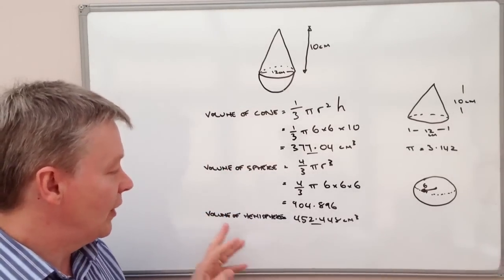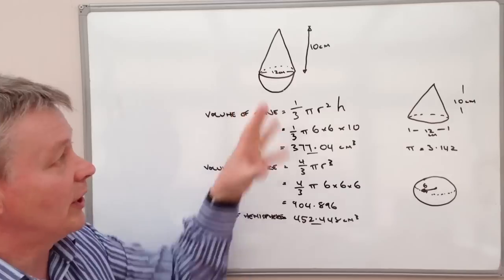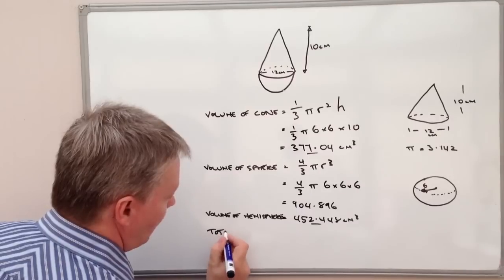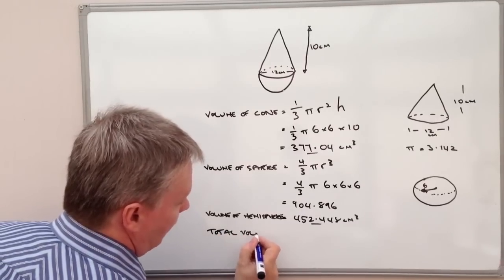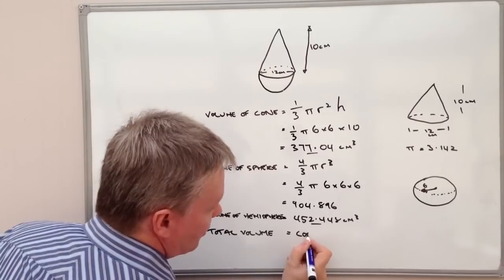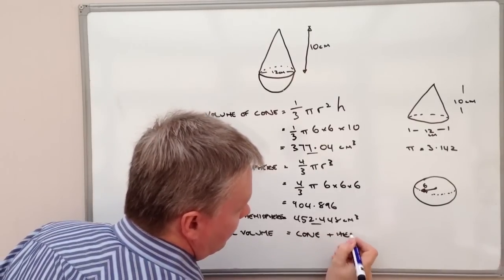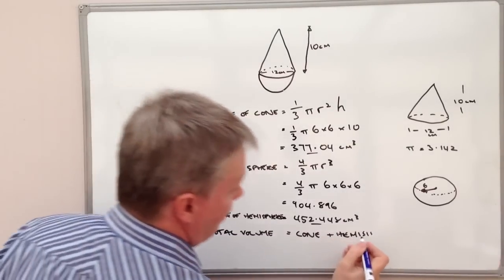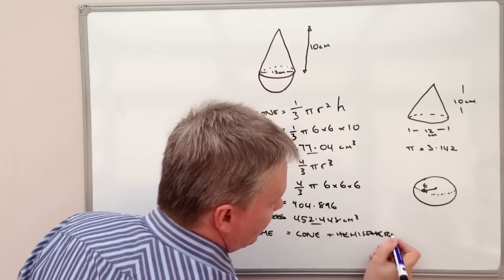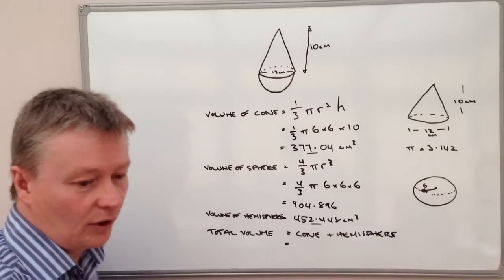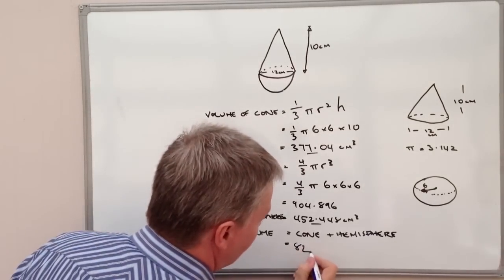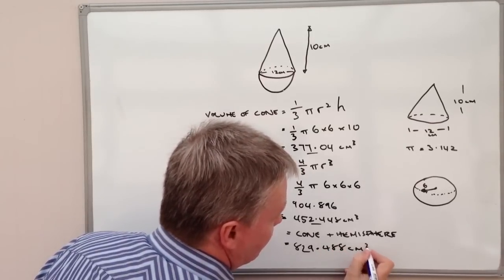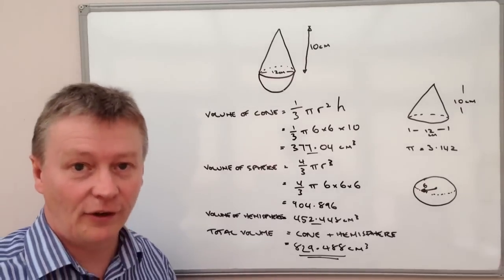Now we have two values: the volume of the cone and the volume of the hemisphere. All we need to do is add those two together. The total volume — cone plus hemisphere — gives us 829.488 centimeters cubed.